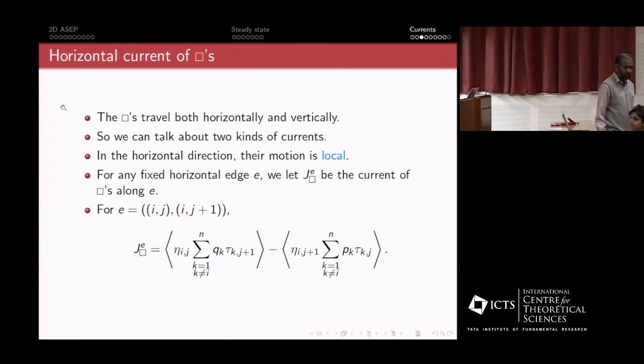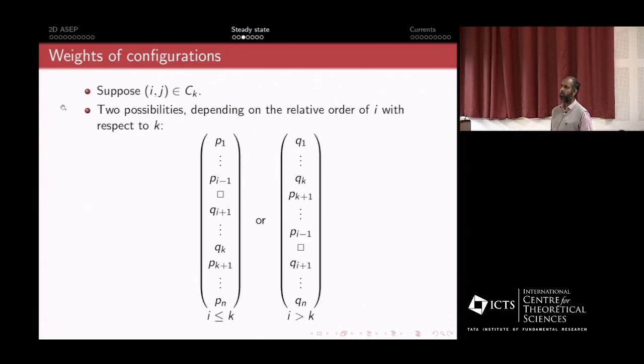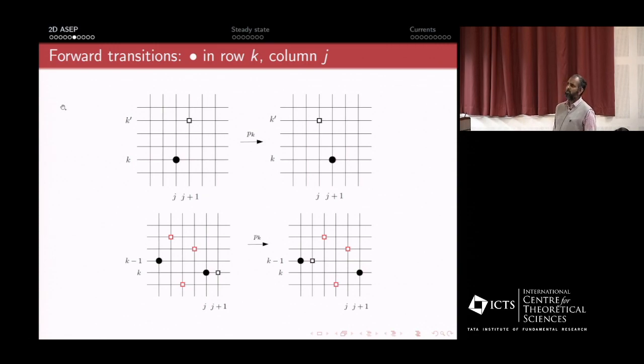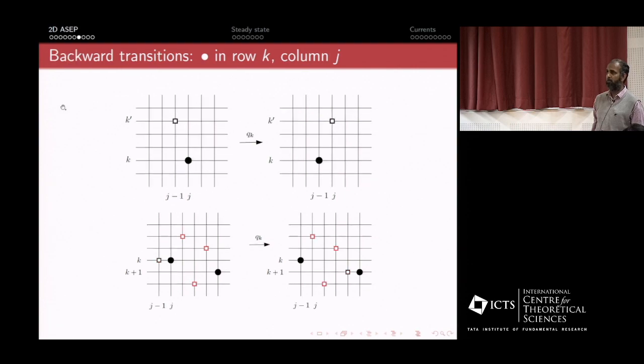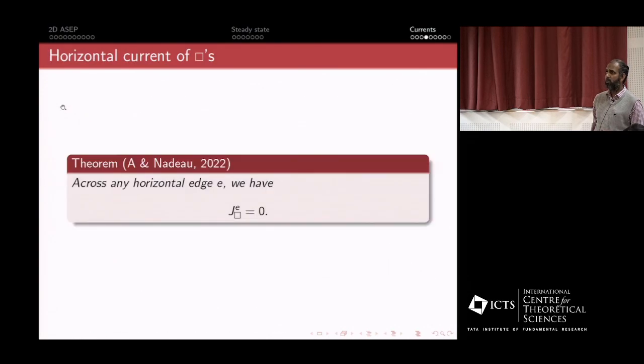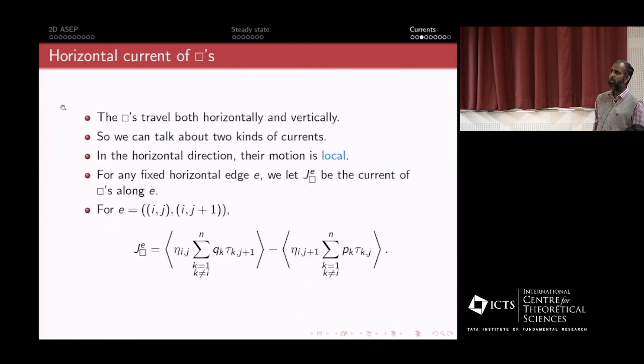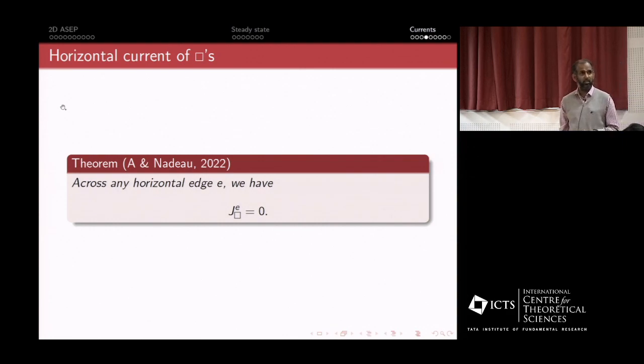What's more interesting is the second class particles. Let me remind you, go back here to the dynamics. For this kind of motion, the second class particles are moving horizontally, but for this kind of motion, this particular second class particle is also moving vertically. A given second class particle sometimes moves horizontally, in which case it's a local motion—it just moves to the next column—or it moves vertically, in which case it performs a highly non-local motion. There are two kinds of currents for the second class particle. In the horizontal direction, the motion is local, and if you calculate the current, it turns out to be exactly zero stationarity. Everything cancels out and you get exactly none. This is not mean field, by the way.